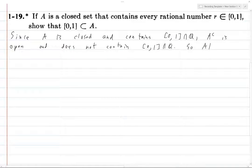So assume for contradiction, which I'll abbreviate this way, that there exists some X in this interval from 0 to 1 such that X is not in A.